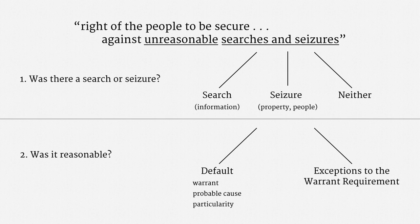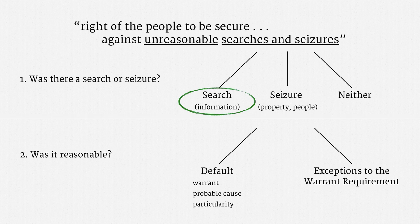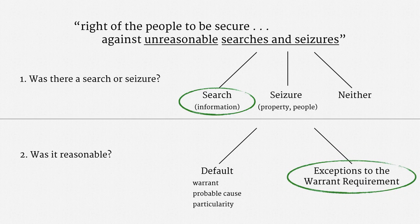Here's a diagram of the Fourth Amendment that I hope is familiar by now. In a border search, the answer to the first question is unchanged. If the government rummages through someone's device or the content of communications, that's a search. It's the second question where the law changes. These border searches are not covered by the default warrant requirement. Instead, they fall into an exception — they just need to be reasonable, for some vague definition of reasonableness.